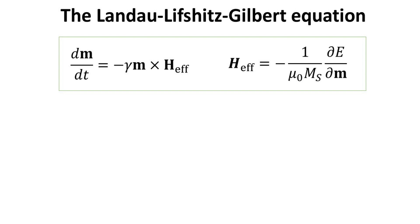Let's begin with the simplest version of the LLG equation, which includes only the conservative torque due to an effective field, H-effective, as shown here. Because such an effective field is conservative, it can be written as the gradient of an energy scalar field. Hence, if one knows how the energy of the moment, E, changes with its orientation in space, M, the effective field going into the LLG equation can be explicitly calculated.